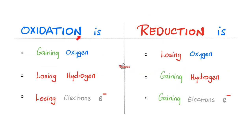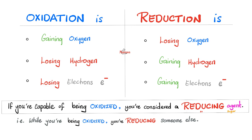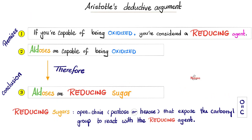What is oxidation chemistry? Either gaining an oxygen, losing a hydrogen, or losing electrons. What is reduction chemistry? The opposite — losing an oxygen, gaining a hydrogen, or gaining a negative electron. Therefore, if you are capable of being oxidized, it means that you are being oxidized while someone else is being reduced simultaneously. It's the oxidation-reduction reaction, or the redox reaction. That's why if you're capable of being oxidized and you are reducing someone else, we call you a reducing agent. All those sugars can be oxidized, therefore they are reducing someone else — we call them reducing sugars.